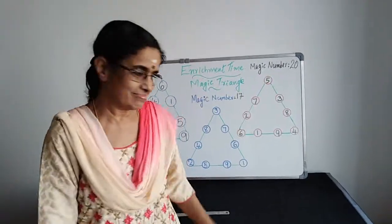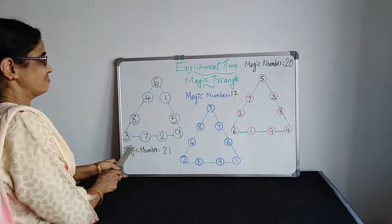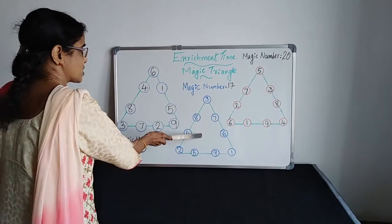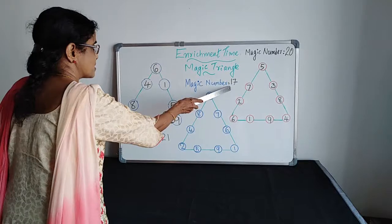Are you ready? Here, the Magic Number is 70. Here, for this Magic Triangle, Magic Number is 70.